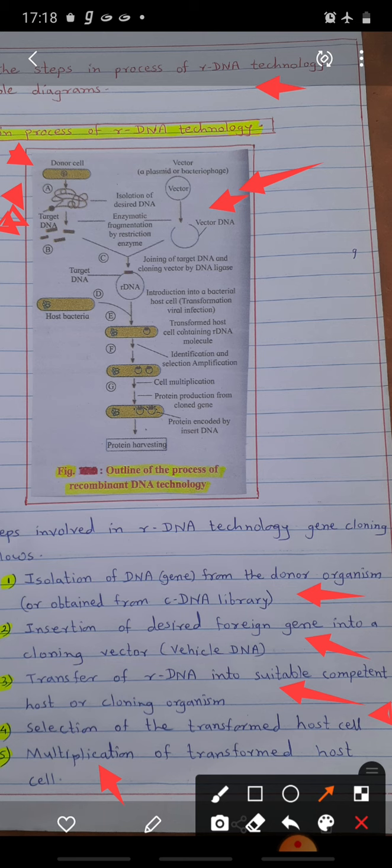Now the next enzyme is DNA ligase enzyme. DNA ligase enzyme is used to join foreign DNA and plasmid DNA. This is foreign DNA and this is plasmid DNA; both are joined with each other.